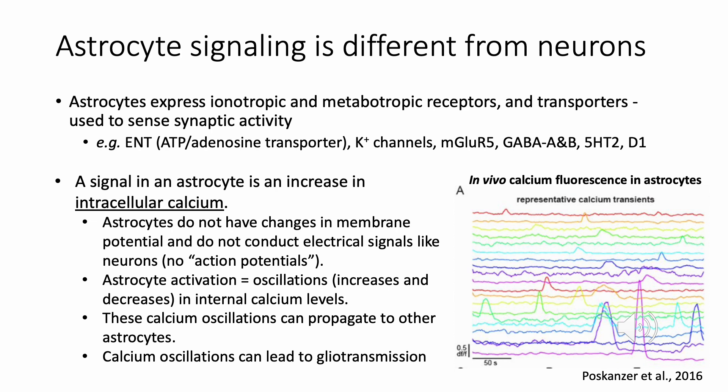These calcium oscillations can occur in one astrocyte and can also propagate to other astrocytes. This figure shows the up and down calcium oscillations in vivo in mouse brain as detected by calcium fluorescence dyes. These calcium oscillations in astrocytes can then lead to gliotransmission.